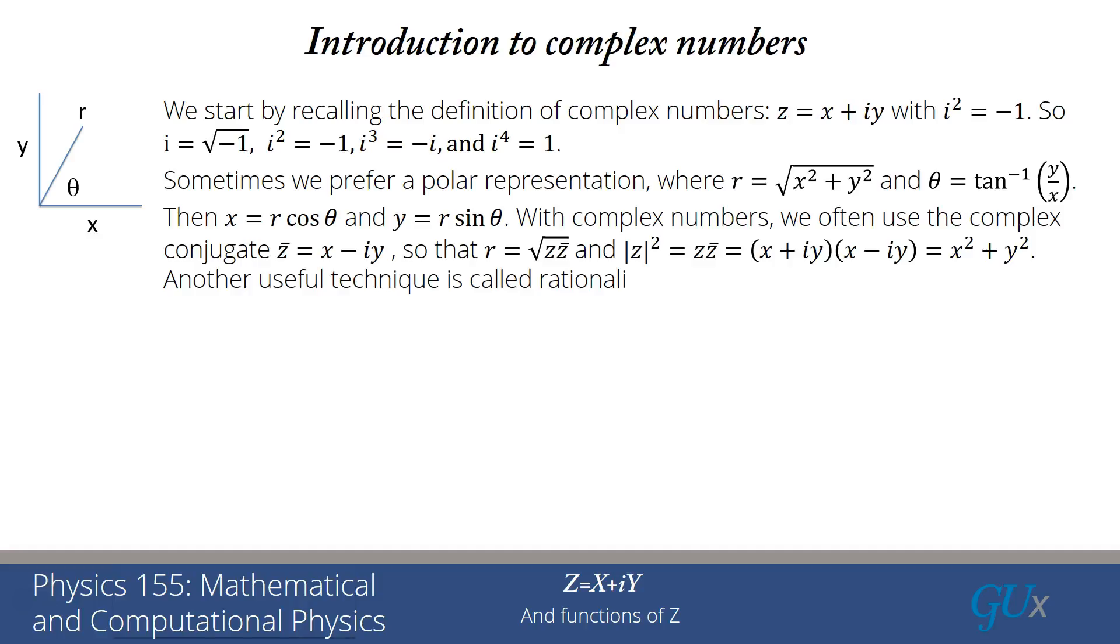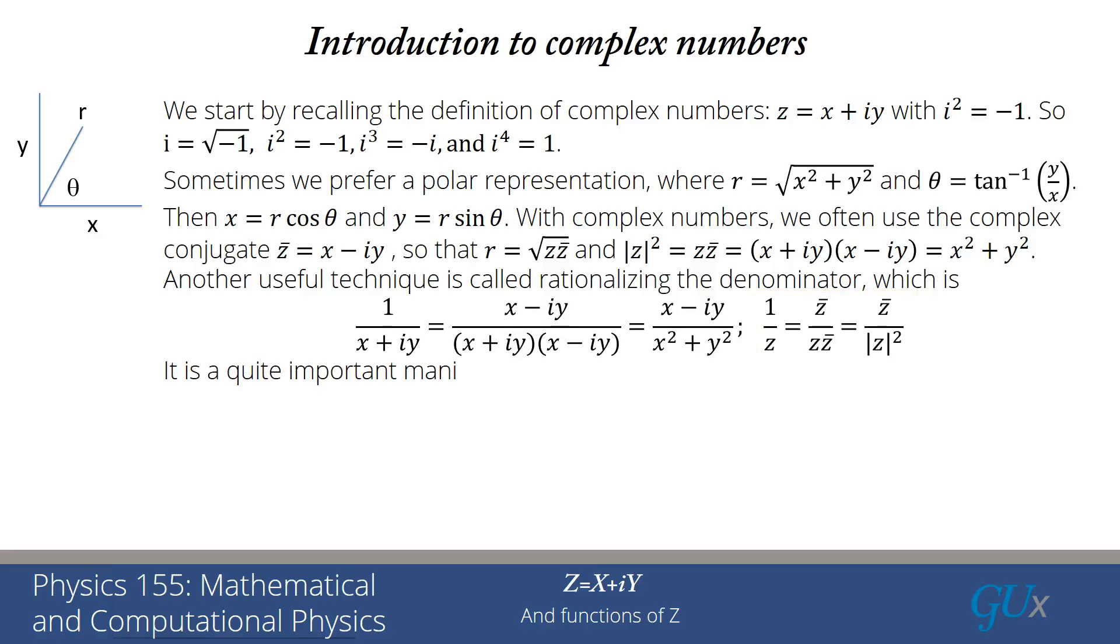Another useful technique is called rationalizing the denominator. If I have a complex number in the denominator, I can multiply by 1 by multiplying by the complex conjugate in the numerator and denominator. Then the denominator becomes R squared, or X squared plus Y squared, and the numerator remains the complex conjugate. So 1 over Z equals Z bar over modulus of Z squared. This is a pretty important identity and manipulation to remember. I strongly encourage you to become familiar with rationalizing the denominator.